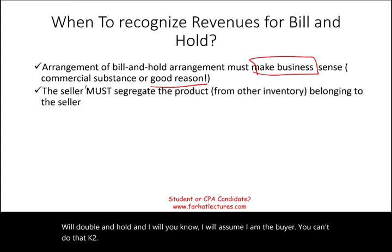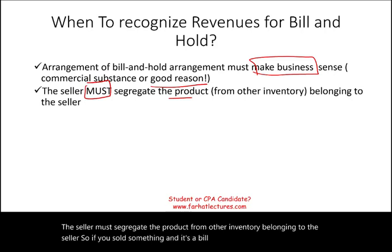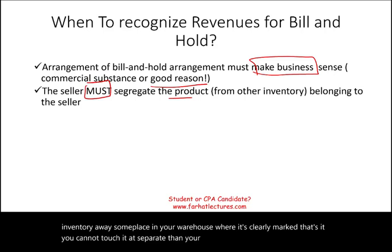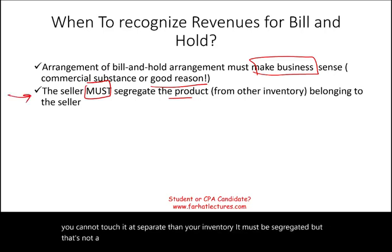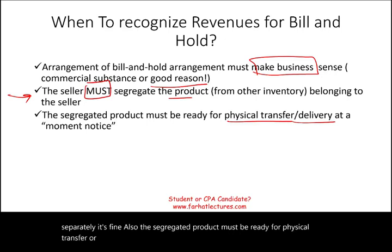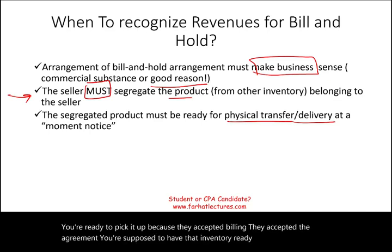Second, the seller must segregate the product from other inventory belonging to the seller. If you sold something under a bill and hold transaction, put that inventory in a clearly marked area in your warehouse — it's separate from your inventory and you cannot touch it. Third, the segregated product must be ready for physical transfer or delivery at a moment's notice. If the buyer wants to pick it up tomorrow, it must be ready, because they have already accepted billing and the agreement.